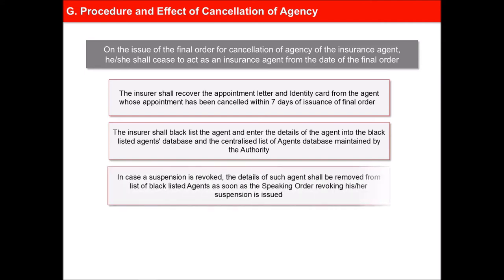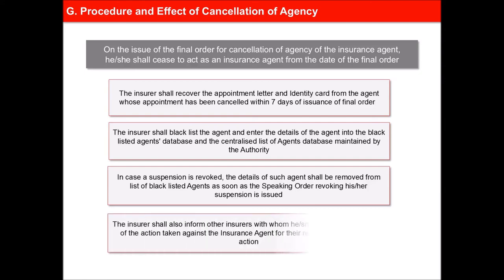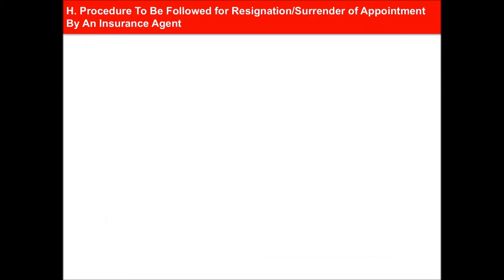In case a suspension is revoked, the details of such agent shall be removed from the list of blacklisted agents as soon as the speaking order revoking his or her suspension is issued. The insurer shall also inform other insurers with whom he or she is acting as an agent of the action taken against the insurance agent for their records and necessary action.